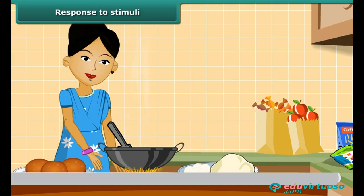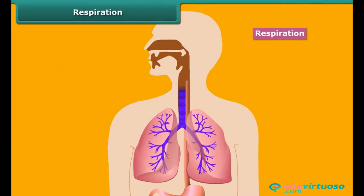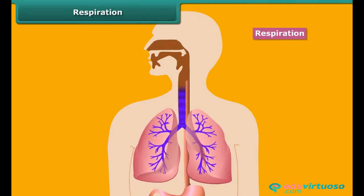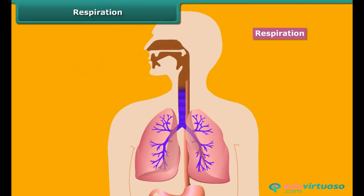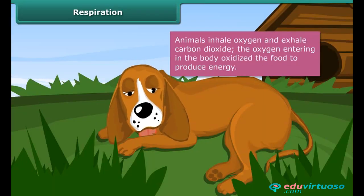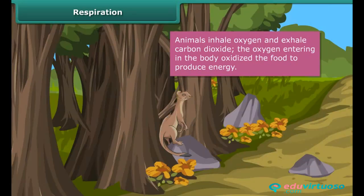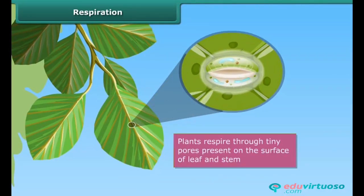This characteristic is called responsiveness to stimuli. Similarly, when we touch a hot utensil, a spontaneous reaction is to pull our hand back. Thus, living things respond to the stimulus received from the surroundings. Respiration is also an important characteristic of living organisms. They require oxygen for the process of respiration. Animals inhale oxygen and exhale carbon dioxide. The oxygen entering the body oxidizes food to produce energy, which is further utilized by the body to carry out various life activities. Plants respire through tiny pores present on the surface of the leaf and stem.